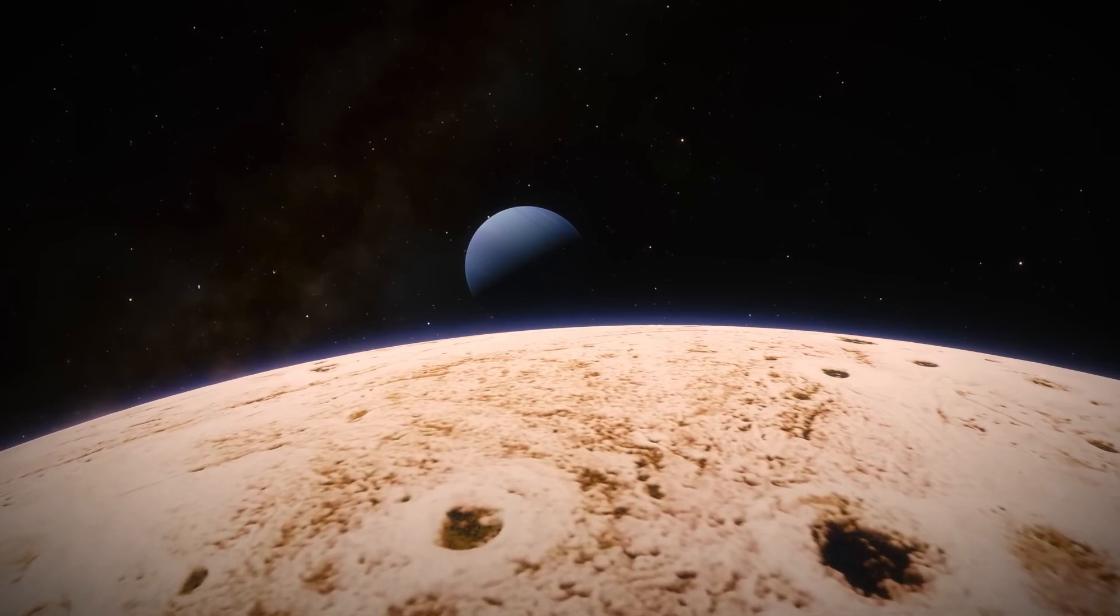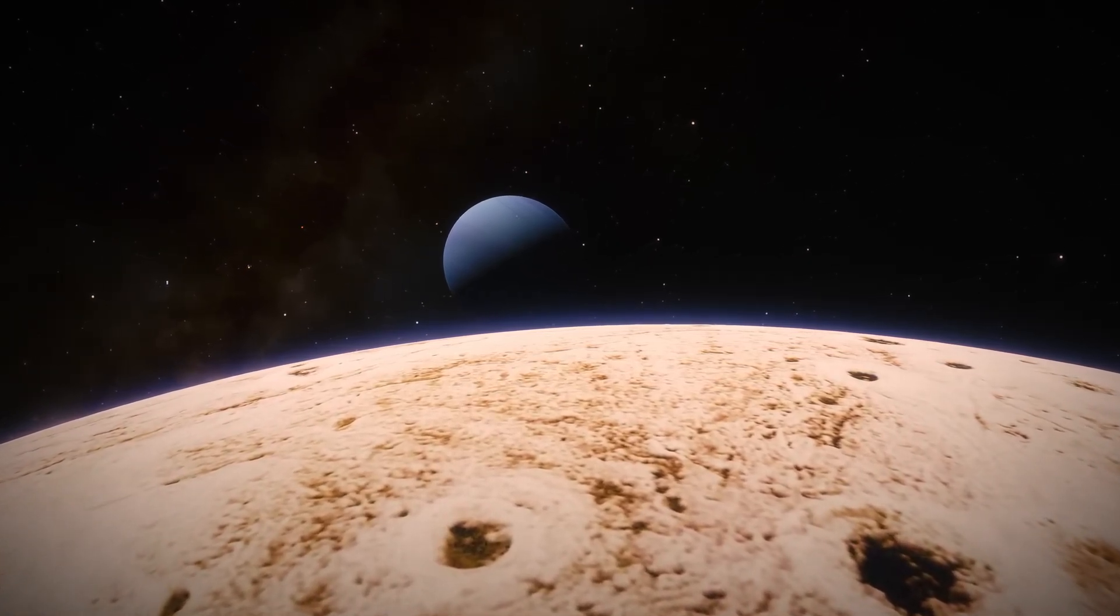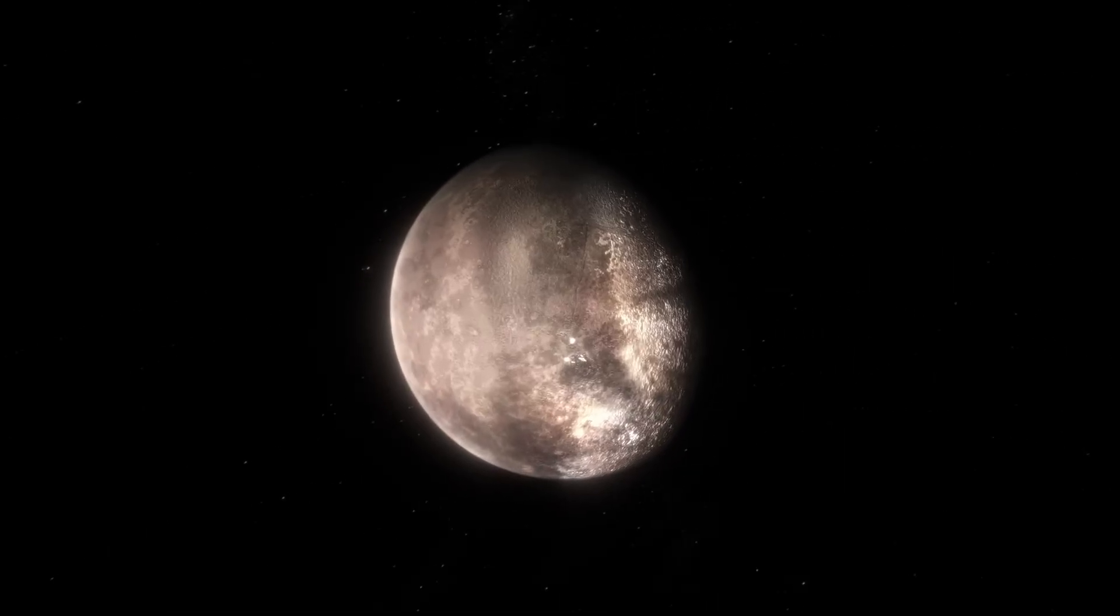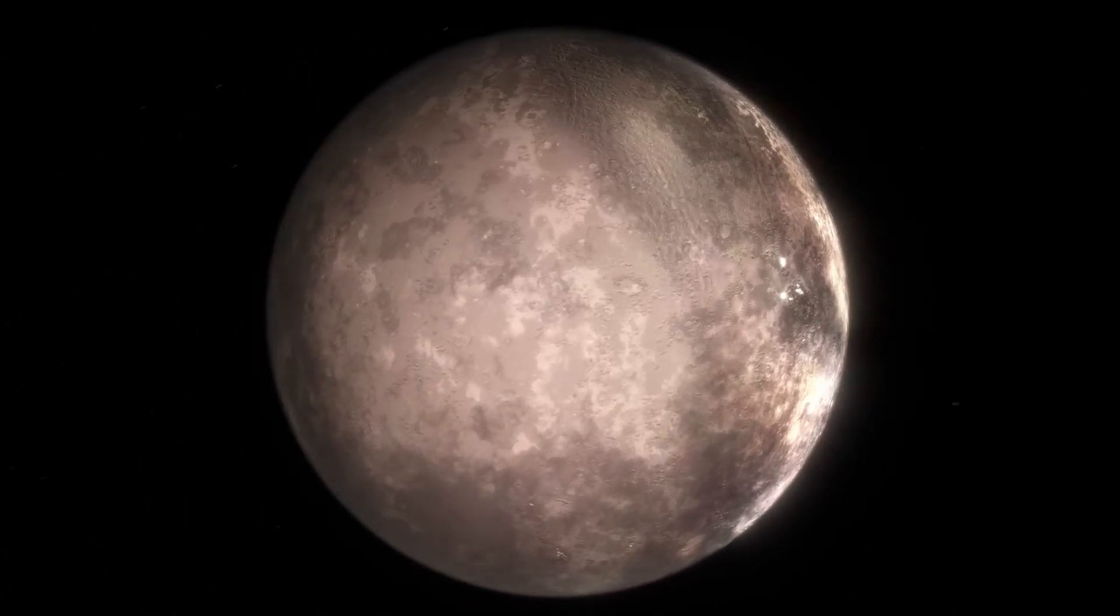His analysis revealed that Triton's orbit is decaying and will eventually cross Neptune's Roche limit, destroying and forming a new ring system around Neptune. The exact timeline for this collision is unknown, but it is estimated to occur within the next few billion years.